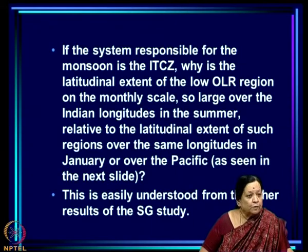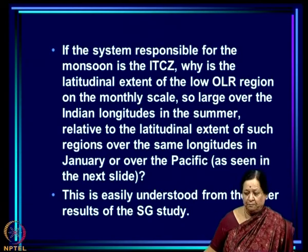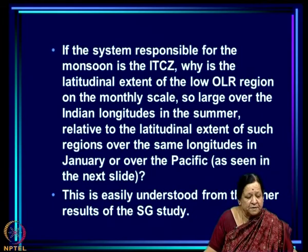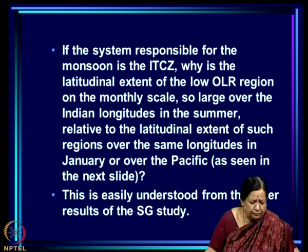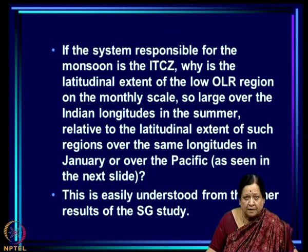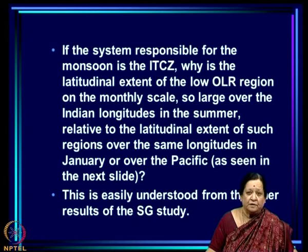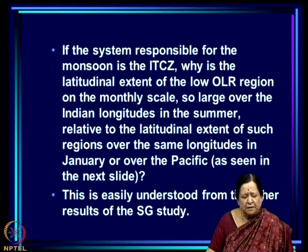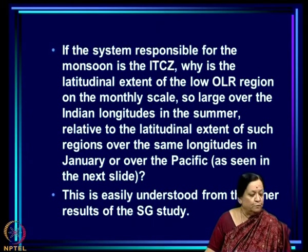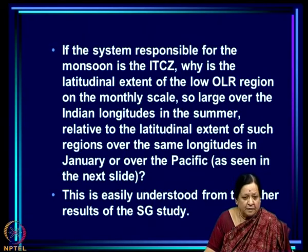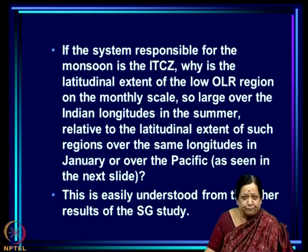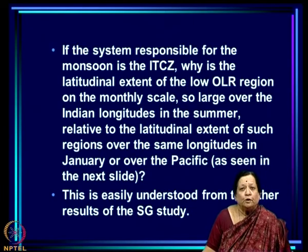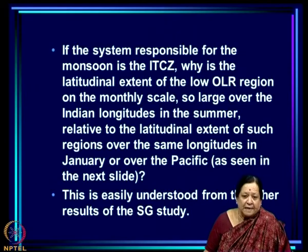In summary: we listed the important dynamical characteristics of the ITCZ and showed that the Maximum Cloudiness Zone seen in satellites — which looks very much like an ITCZ — also satisfies the dynamical characteristics of the ITCZ. On the daily scale, the dynamical characteristics of the MCZ are the same as those of the ITCZ, so we can attribute monsoon rainfall to an ITCZ-type dynamical system. But this raises Murakami's objection: why is the low OLR region so broad on the monthly scale compared to other regions?